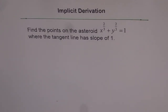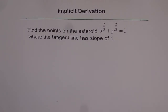Implicit derivation. Find the points on the astroid x to the power of two over three plus y to the power of two over three equals one, where the tangent line has a slope of one.